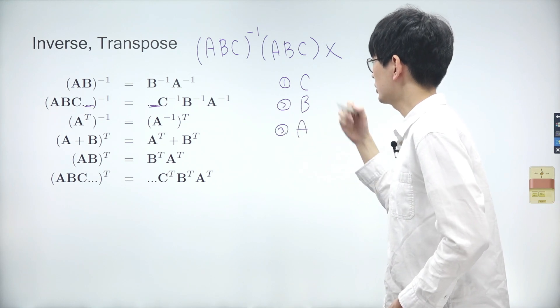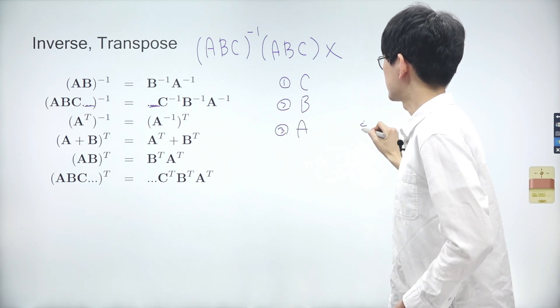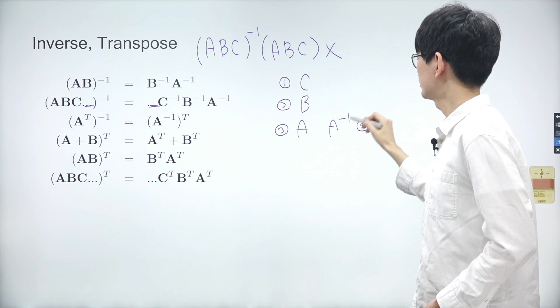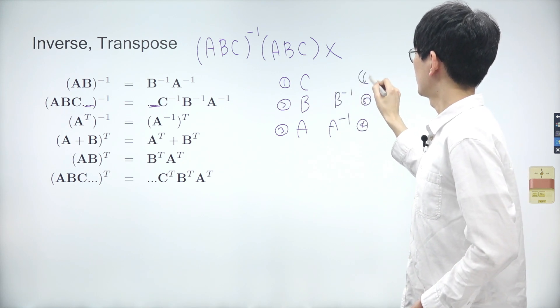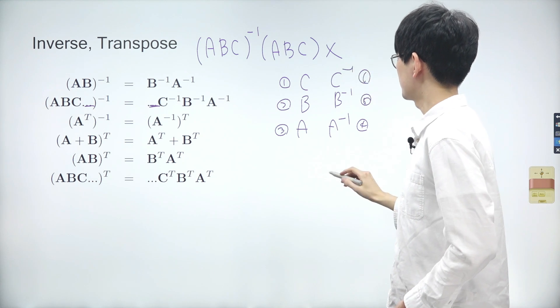To reverse the transformation, we start from A this time. Thus, it goes like A inverse, B inverse, and lastly C inverse. Again, to reverse the transformation, we multiply inverses in the order of A inverse, B inverse, and C inverse.